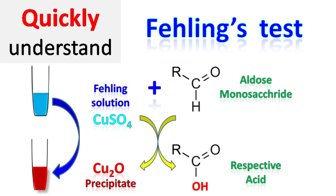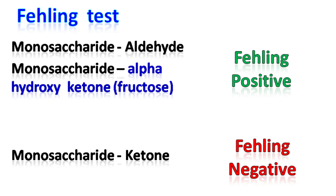Let's talk about Fehling's test. Fehling's test is used to distinguish monosaccharides having an aldehyde or a ketone group. Monosaccharides having an aldehyde group give a positive Fehling's test, while monosaccharides having a ketone group give a negative Fehling's test. However, there is an exception: monosaccharides having an alpha-hydroxy ketone, like fructose, can also give a positive Fehling's test.